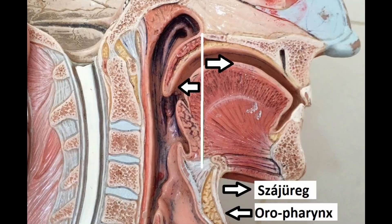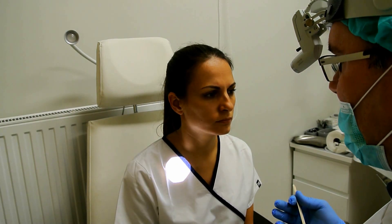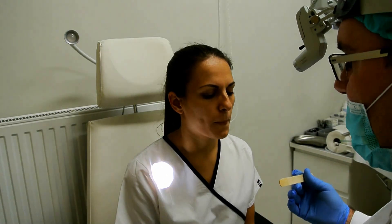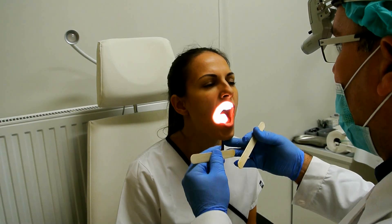After examining the oral cavity, we also check the oropharynx. The oropharynx starts from the anterior arch and the base of the tongue. The anterior arch, posterior arch, palatine tonsils, uvula, base of the tongue, and the posterior and lateral wall of the pharynx are all parts of the oropharynx.